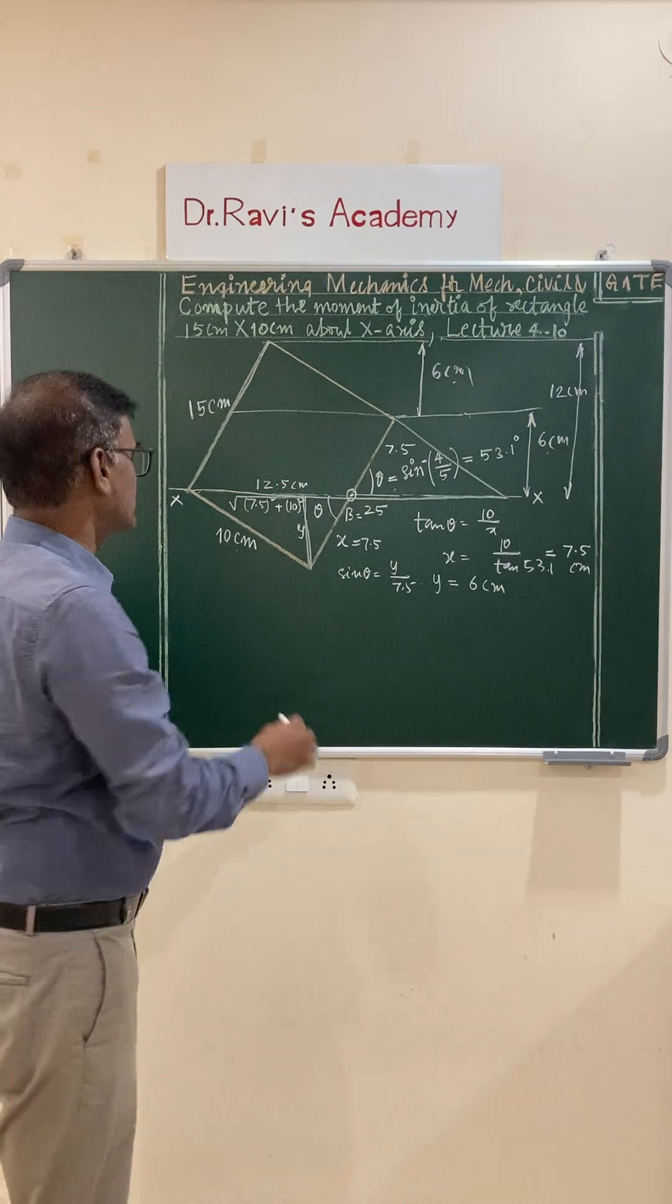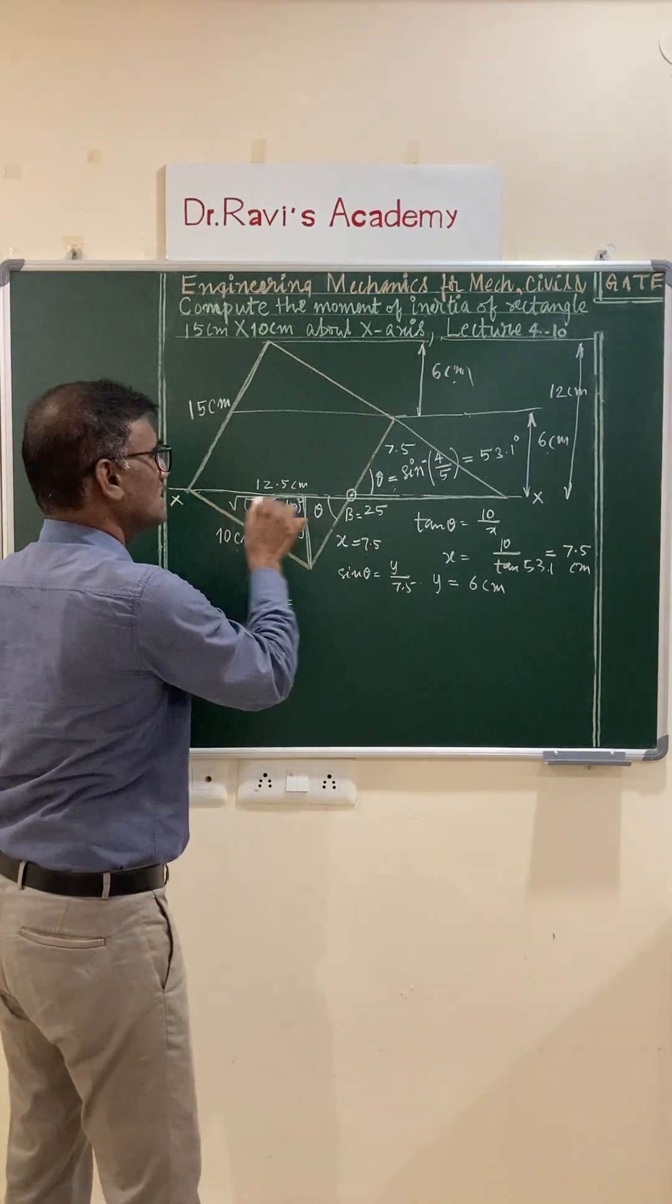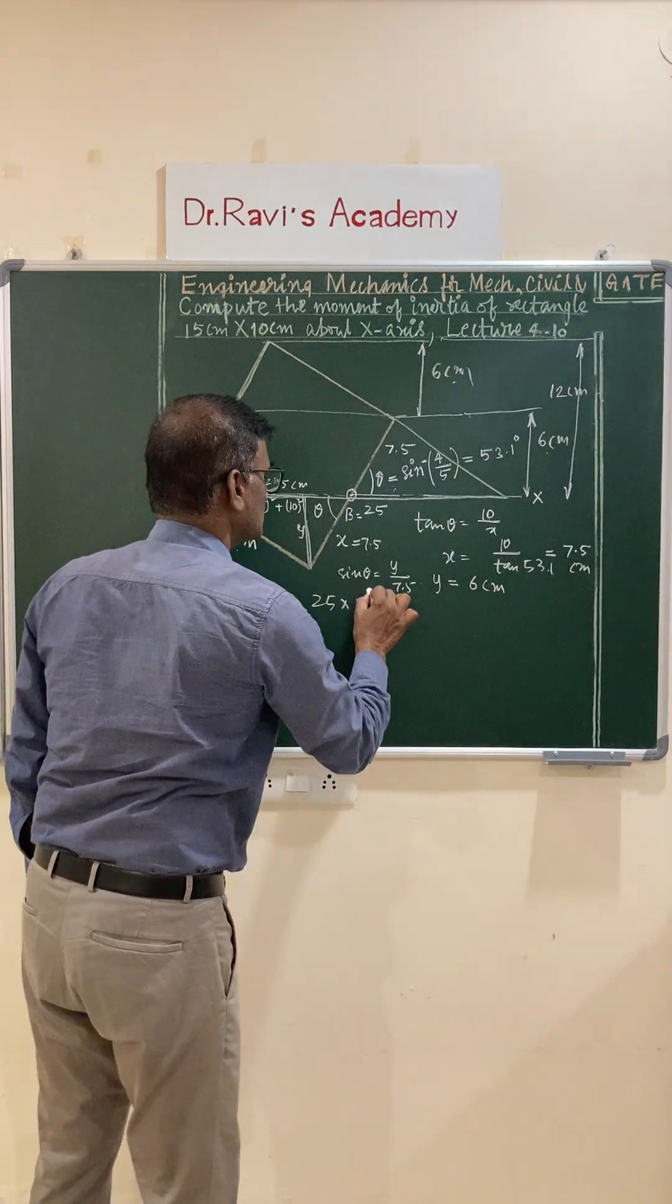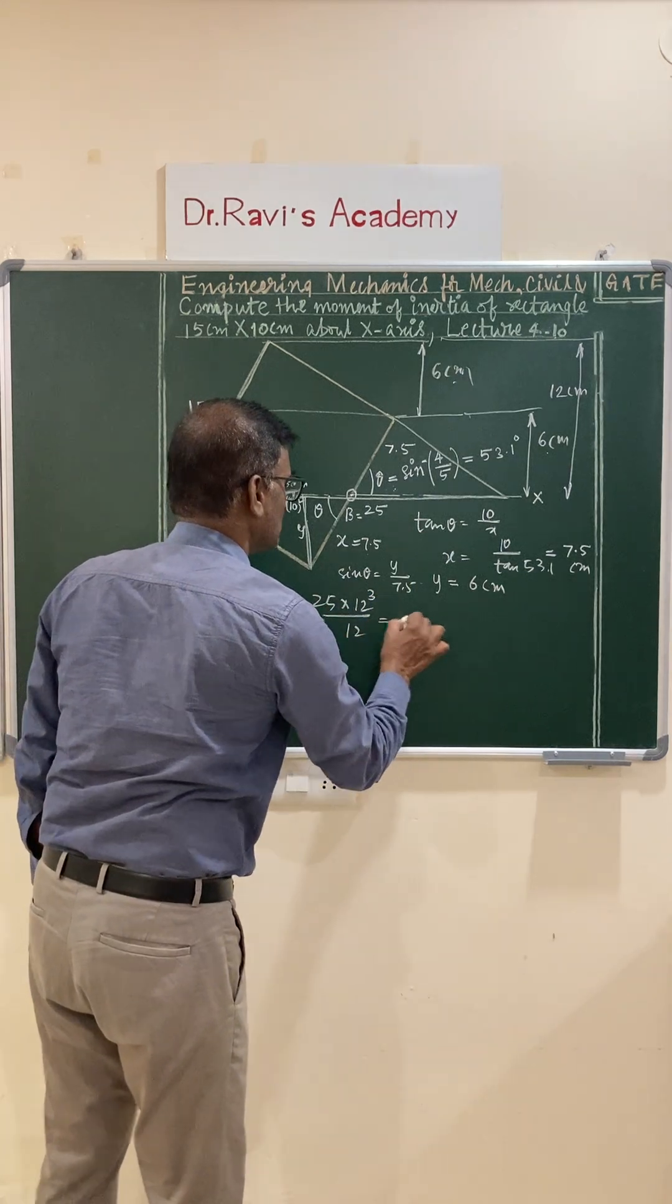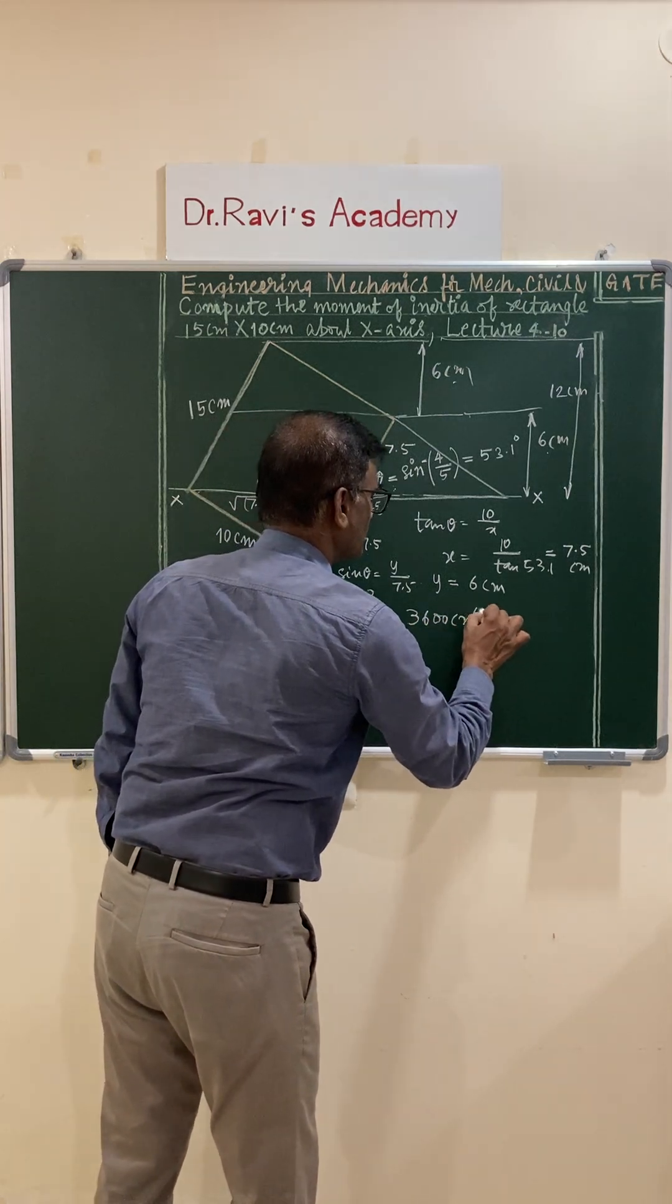Moment of inertia of a triangle about the base is I_x equals B times H cubed divided by 12. That is 25 times 12 cubed divided by 12. This gives you 3600 centimeter to the power 4.